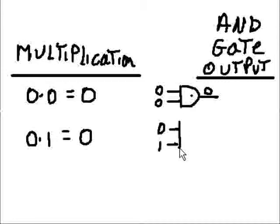Next, if you have a 1 multiplied times 0, that equals 0. In an AND gate, if one input is 1 and the other input is a 0, you end them together.